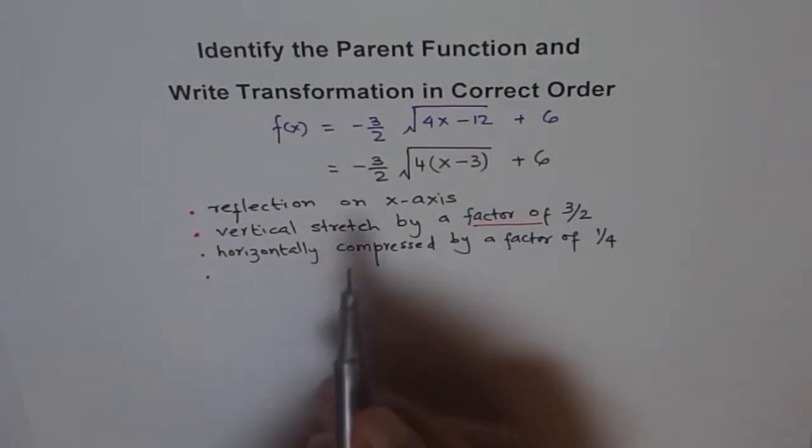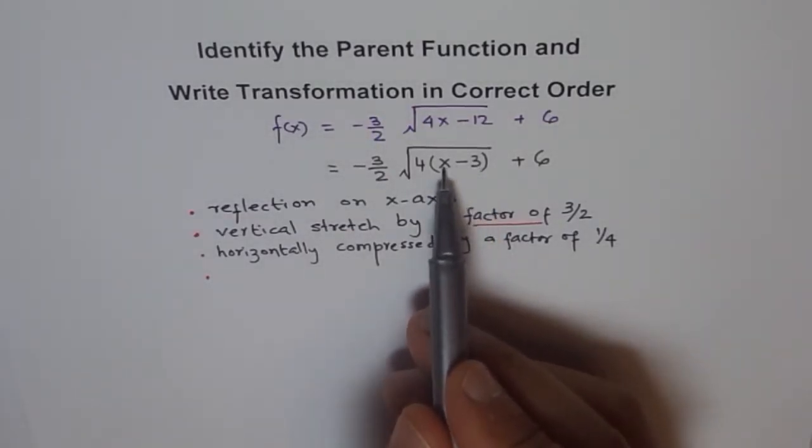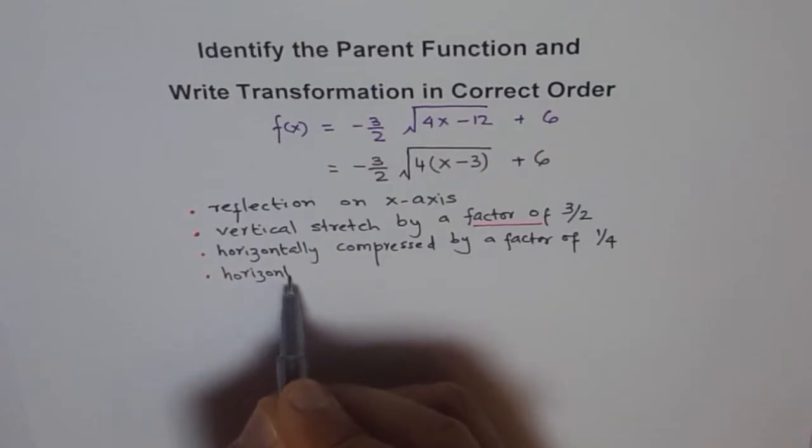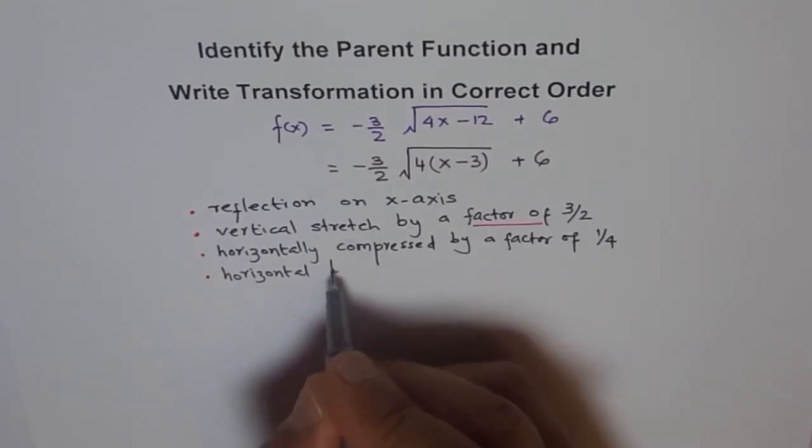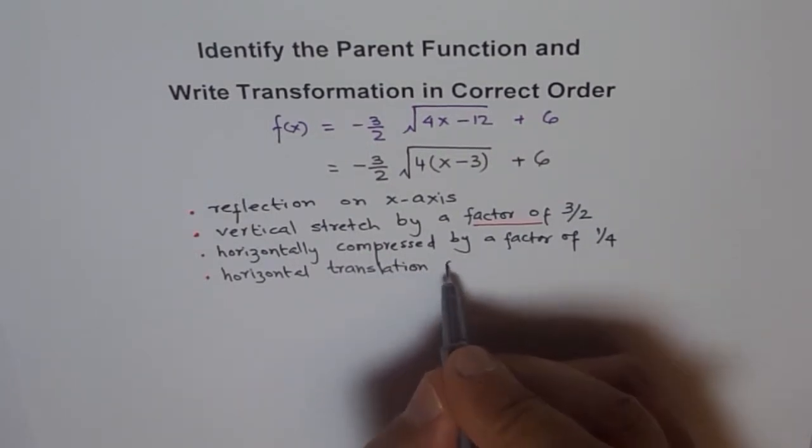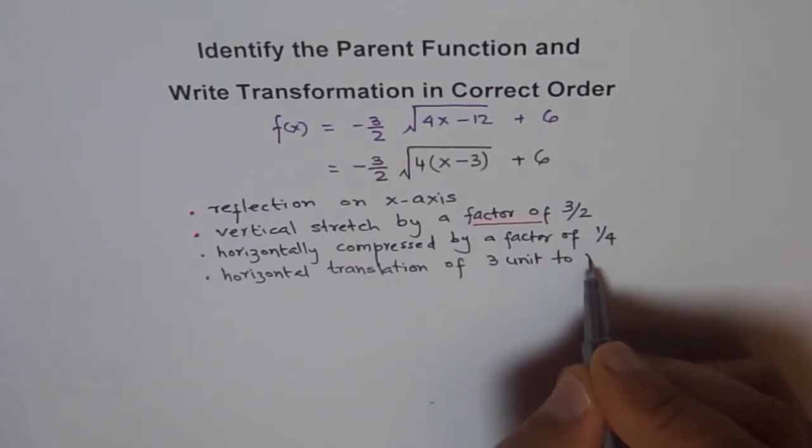And next is, see I am moving left to right. Do you see that? 3. Now 3, what will make this factor 0? 3, plus 3. So you move 3 units to the right. So you say horizontal translation of 3 units to right.